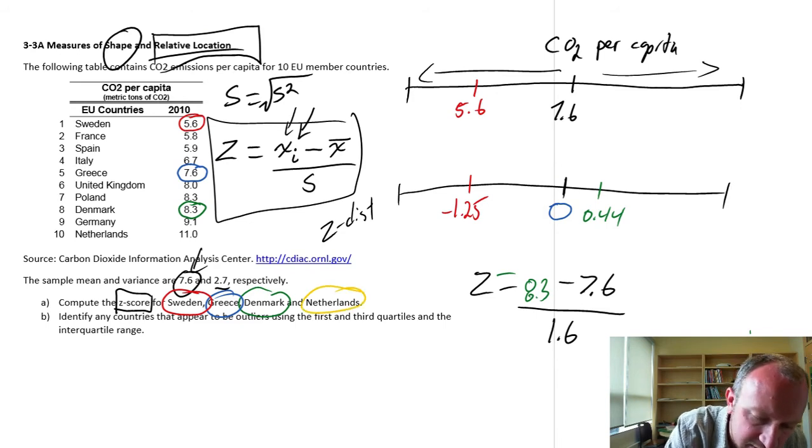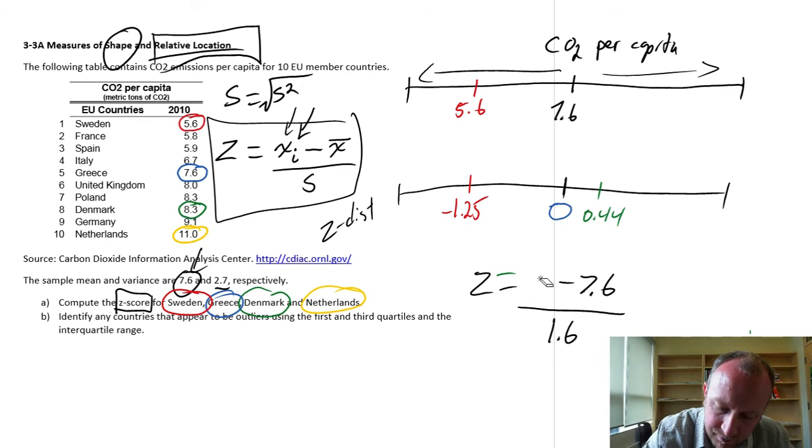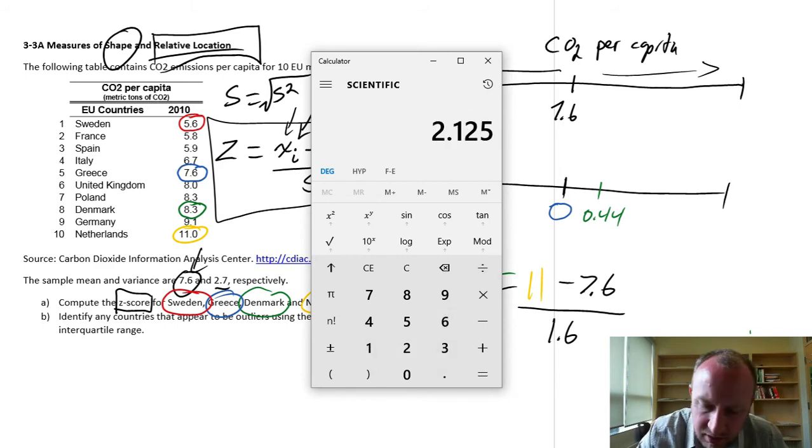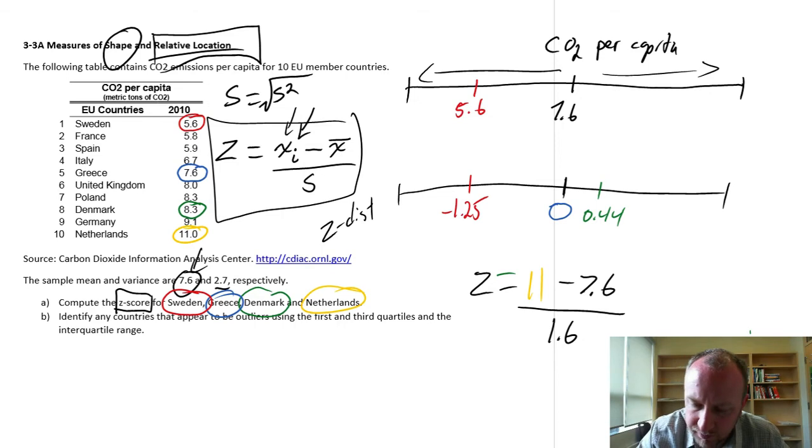And finally, the Netherlands. So this is 11. 11 minus 7.6 divided by 1.6 again. 2 point, let's say 2.1. So we're somewhere up here, 2.1 standard deviations from the mean. There. So that's as simple as that.